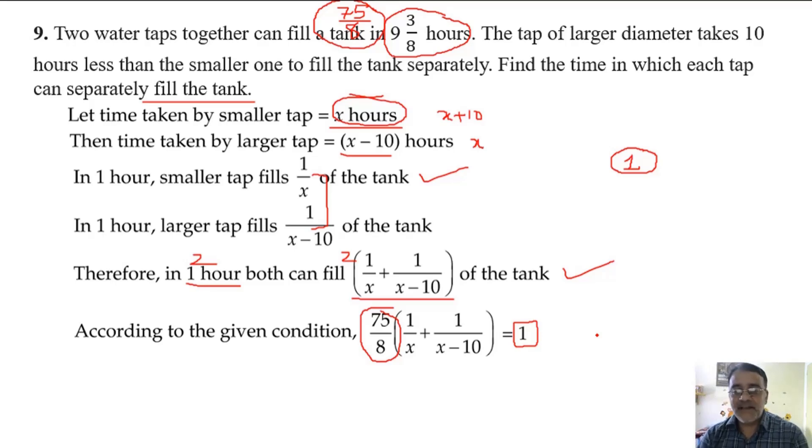So 1 by x plus 1 by x minus 10 is equals to 8 by 75. I explained this once in a video. I think I took this chapter on blackboard. You can watch that once - I explained it in a different way. You compare both the methods and which method is easy for you, you can take that up. This is the second method I'm teaching you.